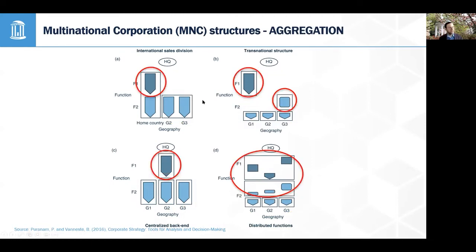Aggregation is the opposite of adaptation: rather than replicating parts of your value chain, you're concentrating them. On the left you have more adaptation but less aggregation; on the right, less adaptation and more aggregation, with each part of the value chain concentrated in a single country. That concentration is independent of how finely the value chain is divided up.